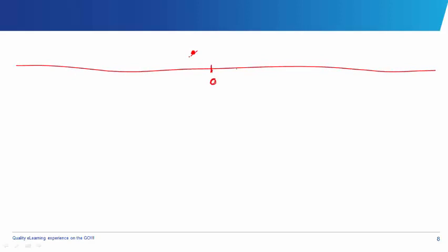This brings us to something we call a Number Line. This is our number line — it's a straight line, and the middle of the straight line is our point 0. Numbers increase this way: 1, 2, 3, 4, down to infinity. And they decrease this way: minus 1, minus 2, minus 3, and you can get to minus 10, minus 1000, minus 10,000, minus 1,000,000, and so on.